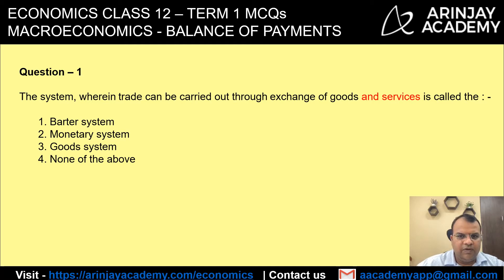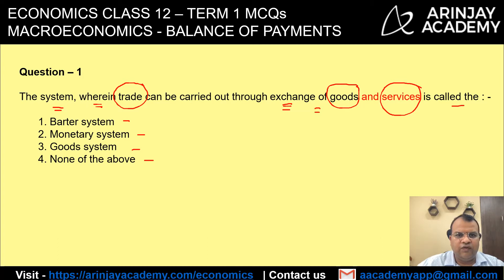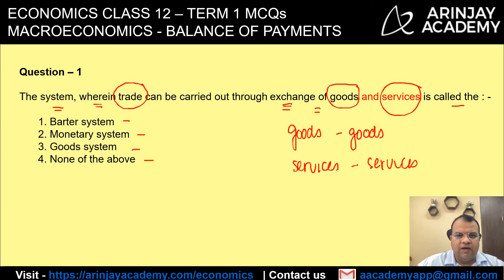Let's look at the first multiple choice question: the system wherein trade can be carried out through exchange of goods and services is called — (1) the barter system, (2) monetary system, (3) goods system, (4) none of the above. When there is an exchange of goods for goods or services for services, it is known as the barter system, and therefore the correct answer is option 1, barter system.